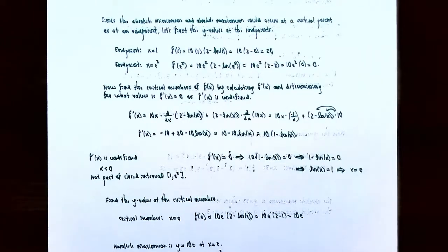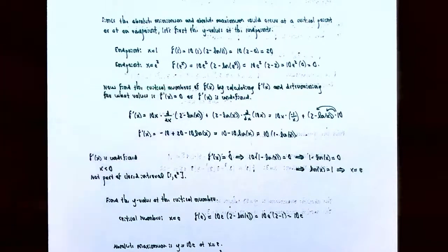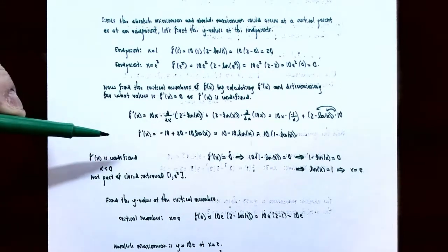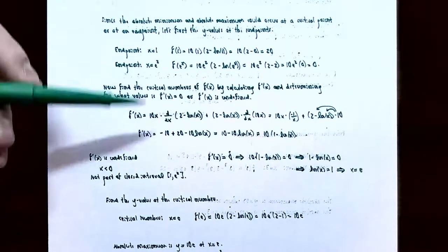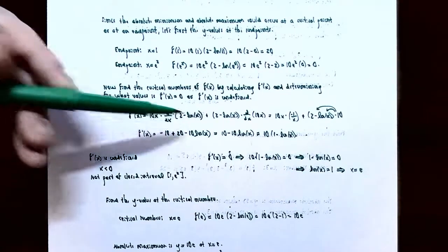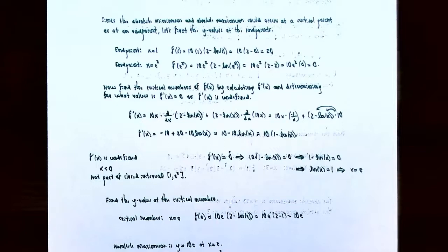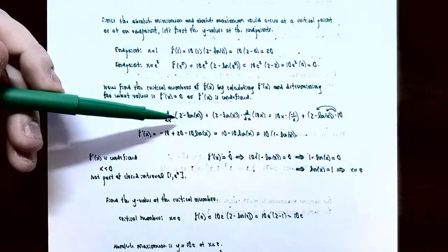We know we're going to have an absolute maximum and minimum, but it may not occur at an endpoint — it may also occur at a critical number. So the next step is to find all critical numbers of f(x) by finding f'(x) and determining where the derivative is 0 or undefined. Notice that we have to use the product rule because we have 10x times (2 − ln x), a product of two different functions. One function is 10x; take the derivative of the other function, d/dx of (2 − ln x), plus keep the second function (2 − ln x) times d/dx of 10x.